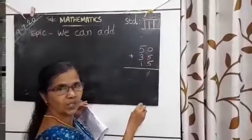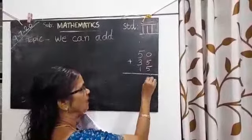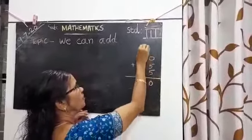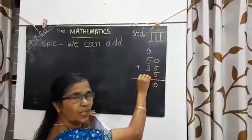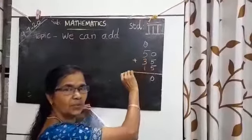Here, 5 plus 5 is equal to 10. Carry over 1. Then, 3 plus 1 or 1 plus 3 is equal to 4.